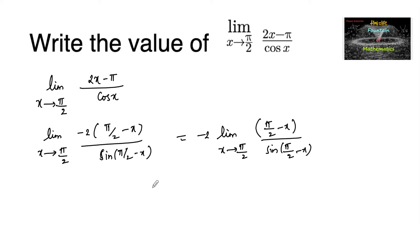So for our convenience, let us consider pi by 2 minus x is equal to h. So as x tends to pi by 2, h tends to 0.